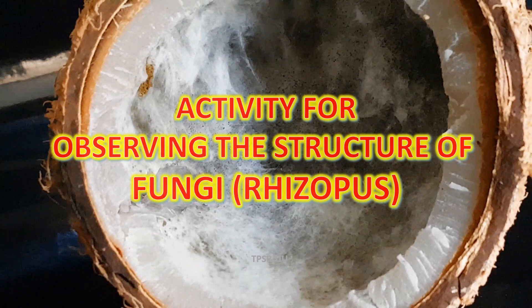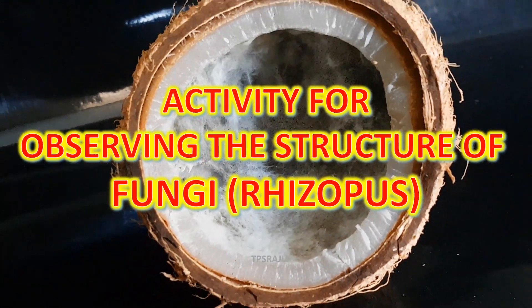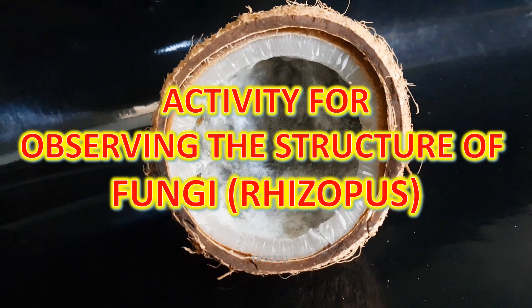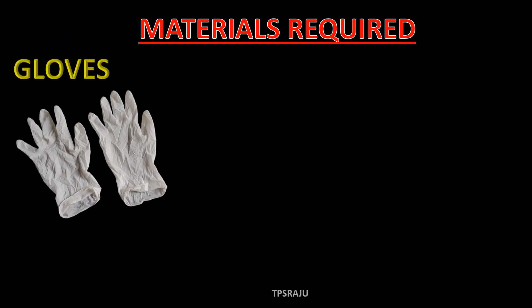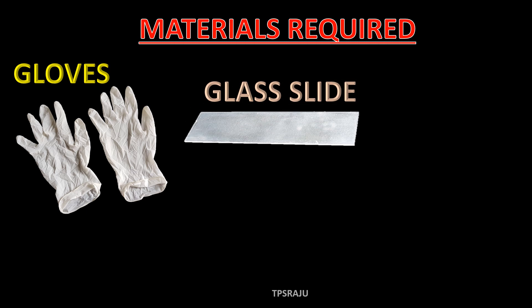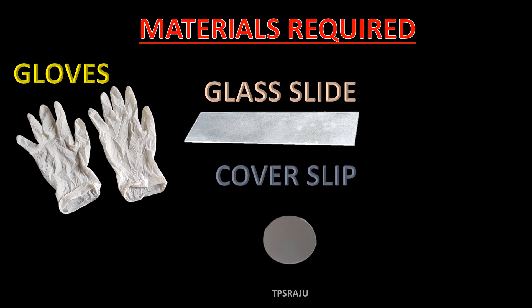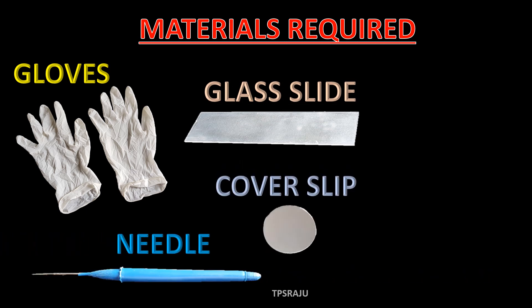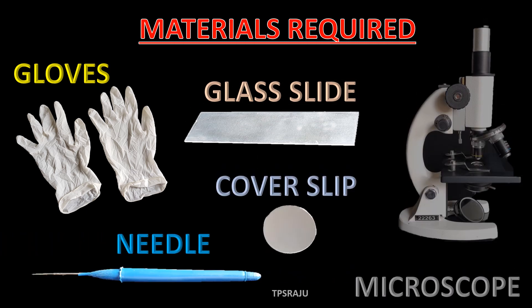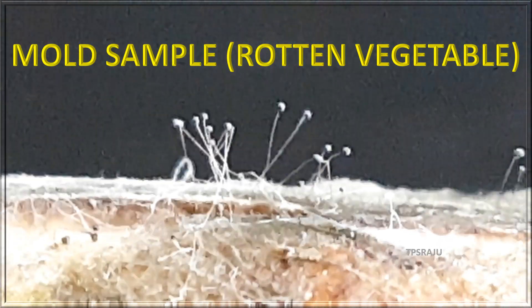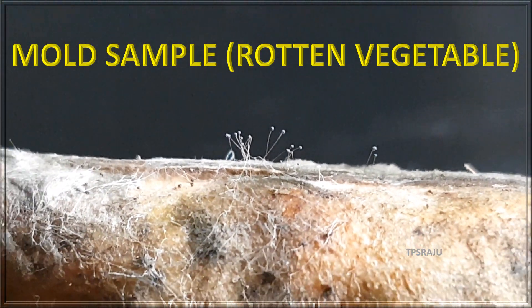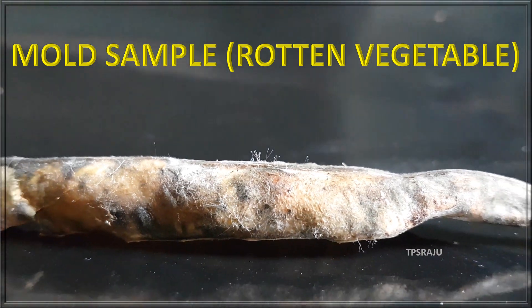Activity for Observing the Structure of Fungi. Materials required: Gloves, Glass Slide, Coverslip, Needle, Microscope, and Rotten Vegetable for Mold Sample.